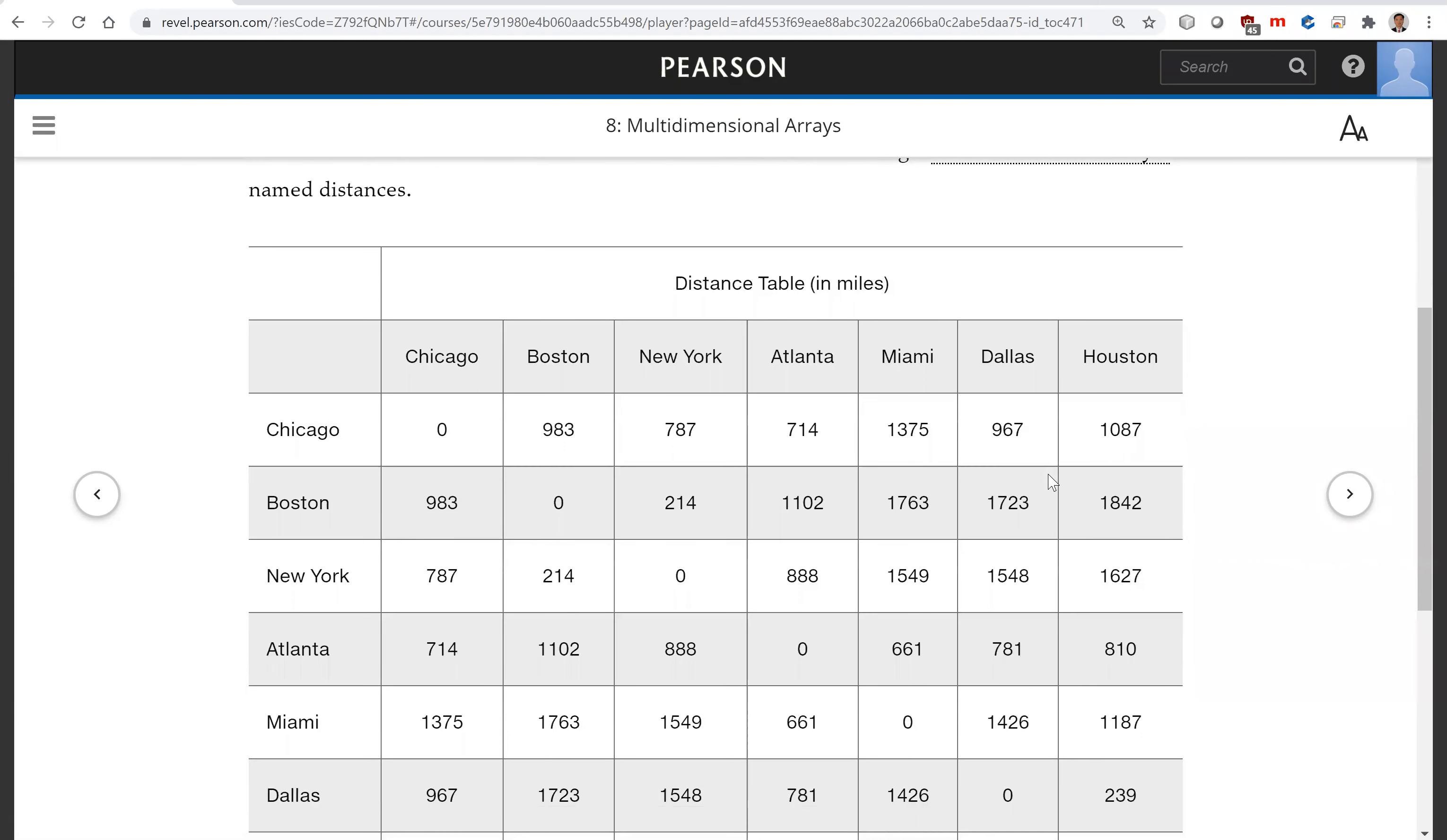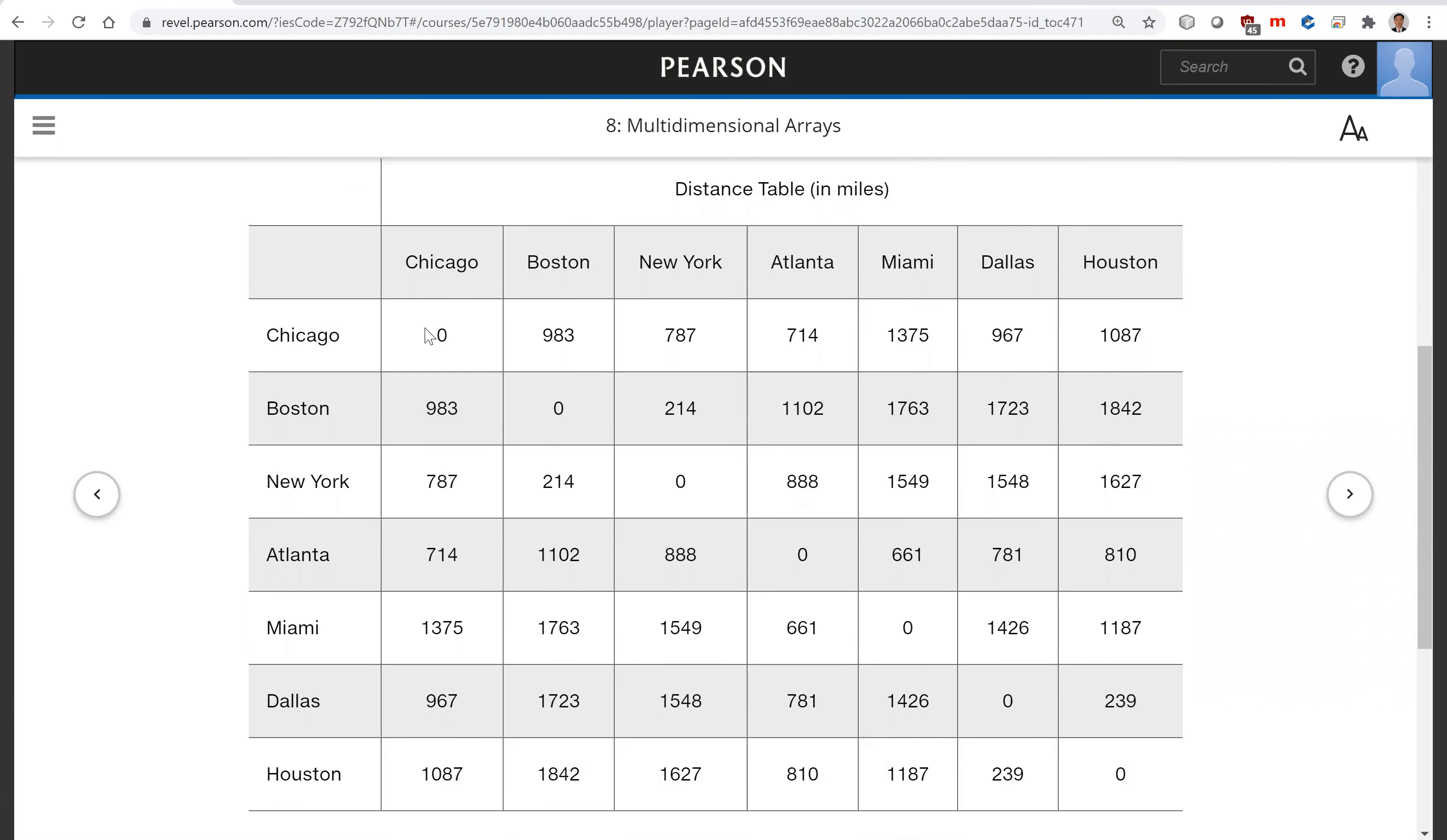So look, this is the table for the distance: Chicago to Boston, to New York, to Houston. Chicago to Chicago itself—this distance is zero.